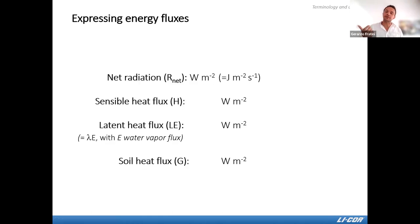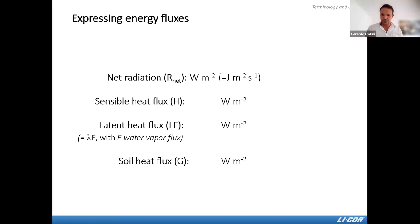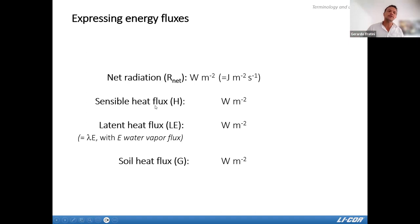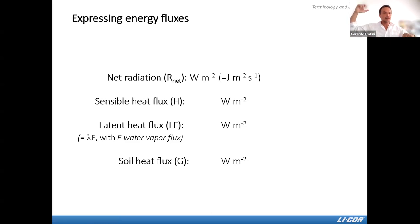With eddy covariance we can also measure the flux of energy. The units of energy flux are joules per square meter per second, which equals watts, so energy fluxes are expressed in watts per square meter. This applies to sensible heat flux, latent heat flux, and soil heat flux — the last measuring energy moving across the soil rather than the atmosphere.